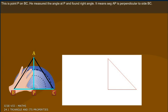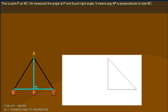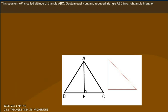He measured the angle at P and found right-angle. It means segment AP is perpendicular to side BC. This segment AP is called altitude of triangle ABC.